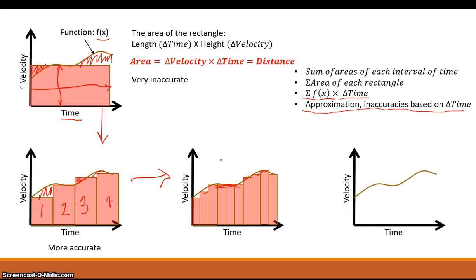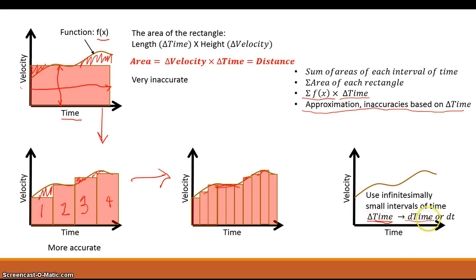So what do we do? If we take this same function and instead of using a delta t we go to the smallest we can get — taking delta t as time approaches zero — the limit of t as time approaches zero — we use infinitesimally small intervals of time. We go from the idea of using delta t to using a differential: infinitesimally small units of time. We can write that as dt, which is probably what you're more familiar with in integration. You don't see delta t — you see dt — meaning you're referencing an infinitesimally small unit of time.